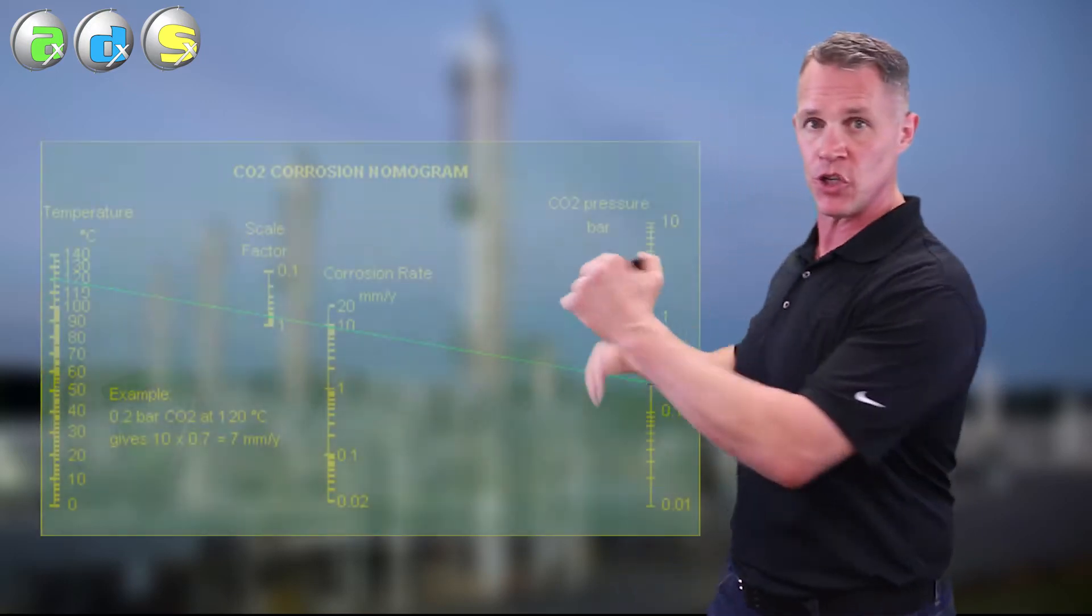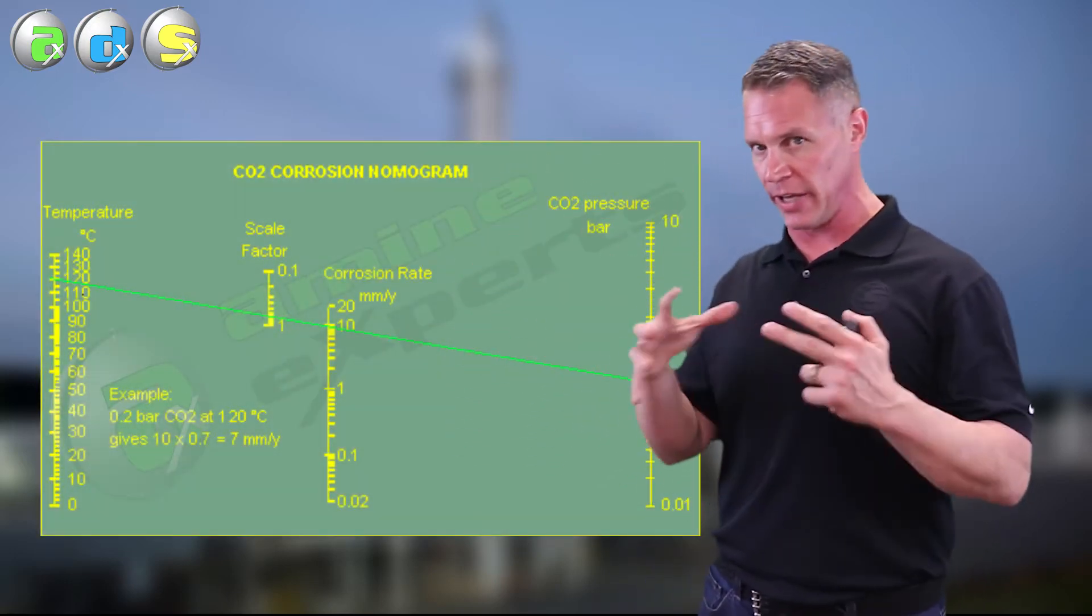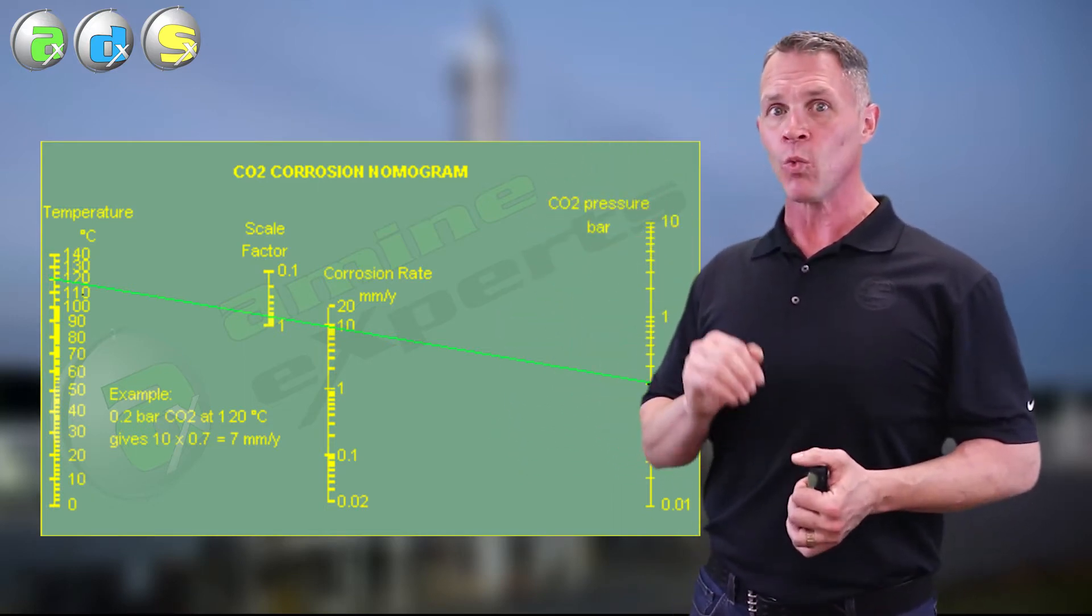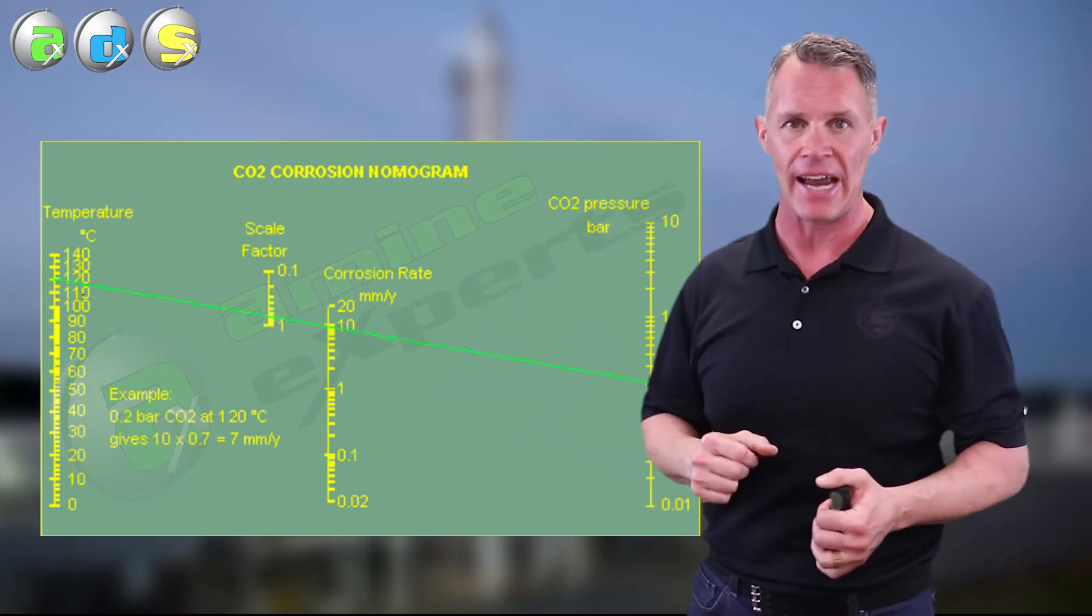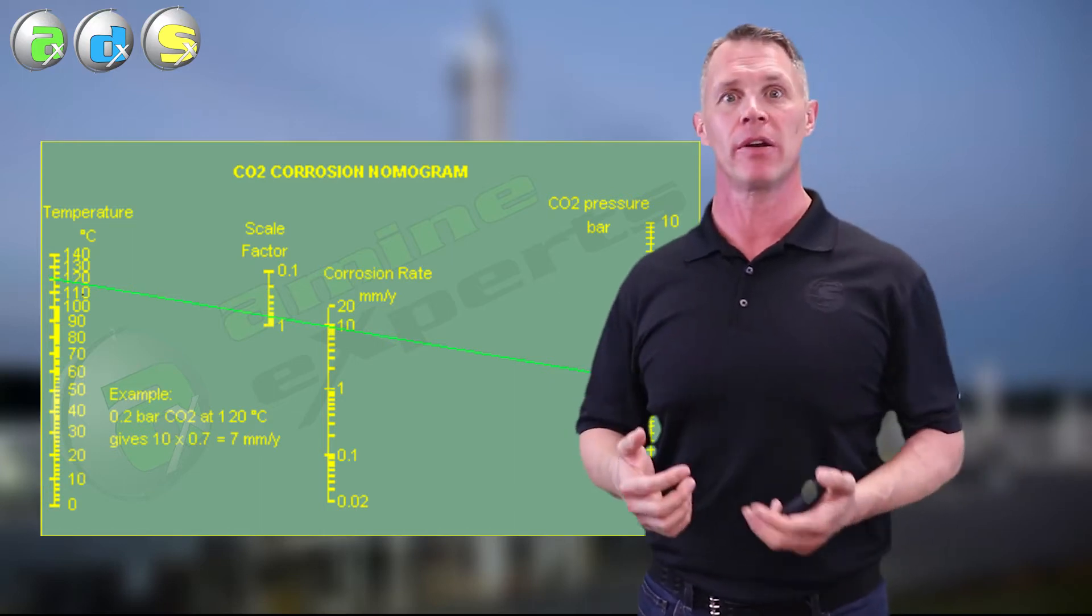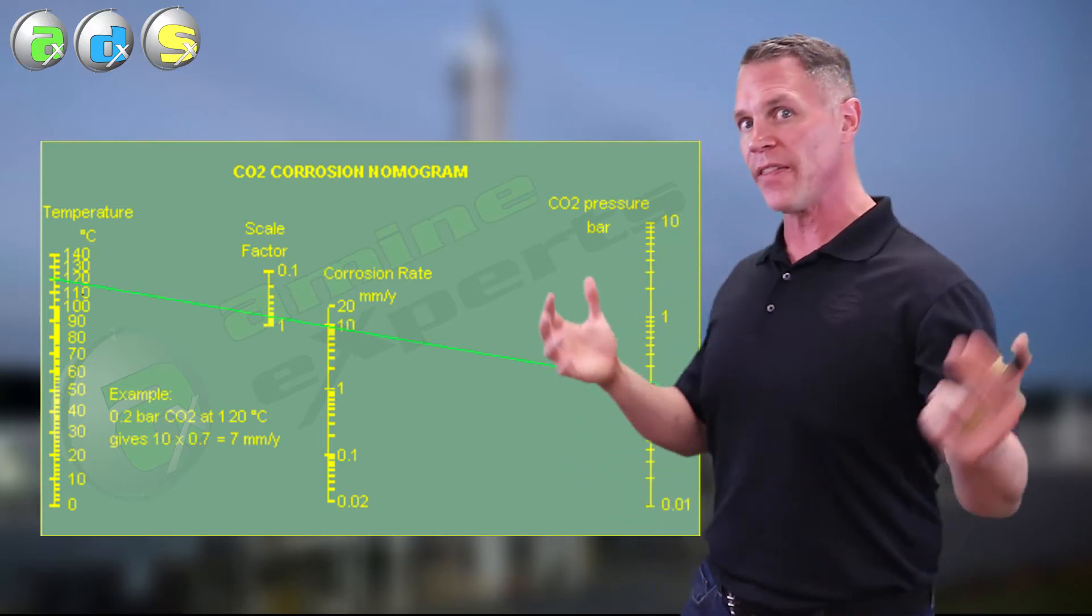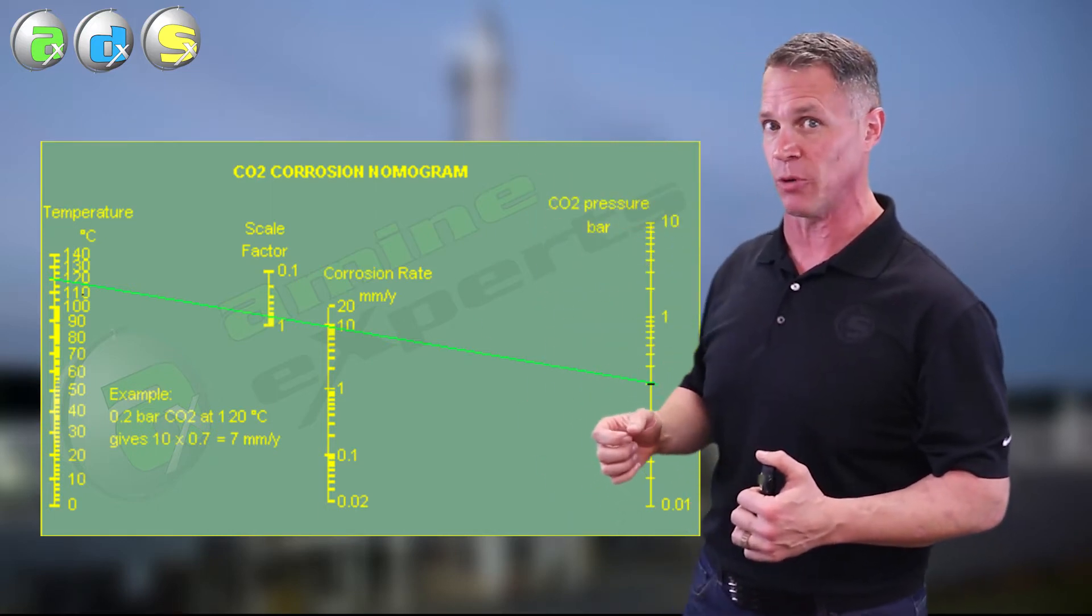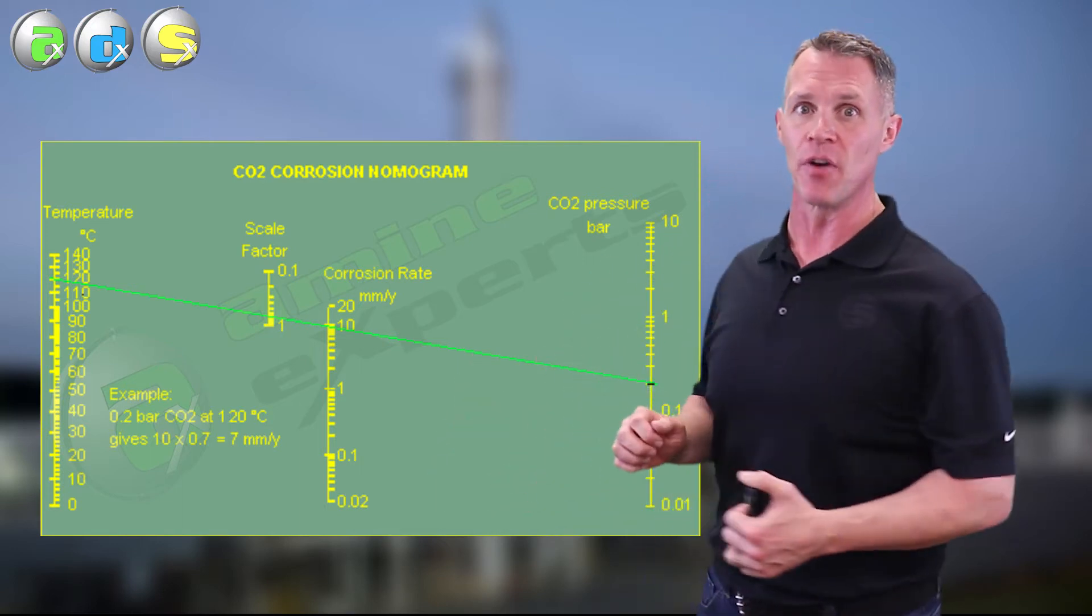Remember back to part one of this video series, we showed a nomograph that illustrated the relationship between CO2 and temperature. Quite simply, we don't want CO2 to be in areas of high temperature in our amine plant. Now of course the regenerator and reboiler are high temperature. So the idea is, when the amine enters the regenerator, we want the CO2 gone as soon as possible. And we definitely don't want CO2 entering the reboiler.